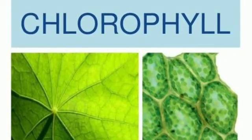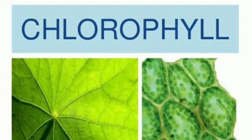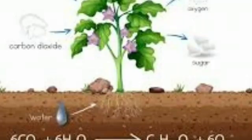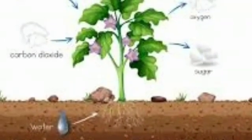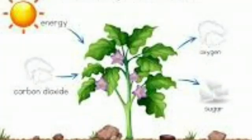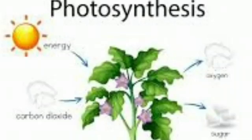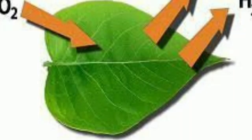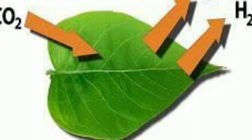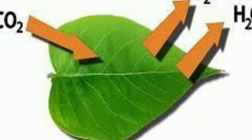So, what is photosynthesis? Food preparation in plants in the presence of sunlight is called photosynthesis. Plants prepare their own food by using carbon dioxide and water. What is the food produced during photosynthesis? That food is glucose. Glucose is formed during photosynthesis.